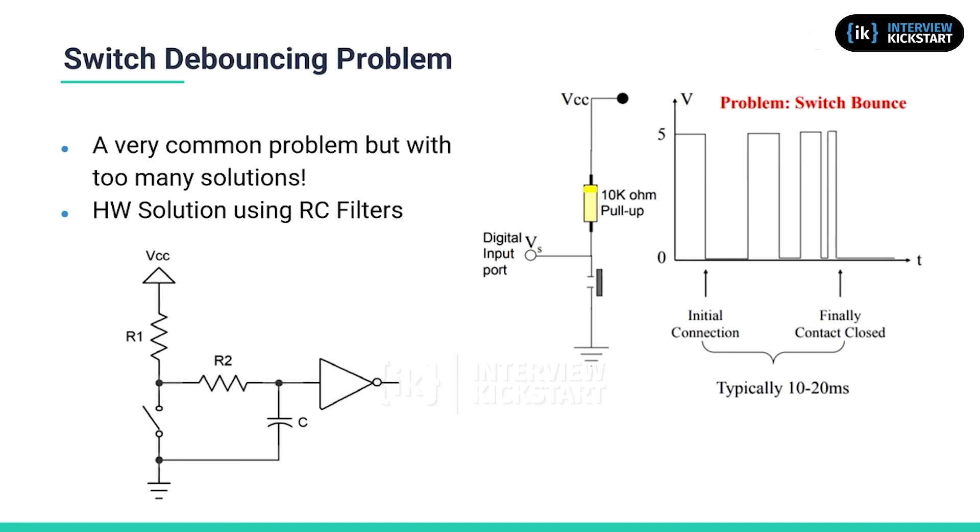Let's take a close look at the bouncing pulses in the figure on the right. By experimentation, we know that for this particular switch, a single press of the button can generate a burst of pulses for about 20 milliseconds.